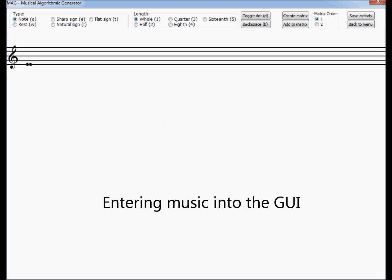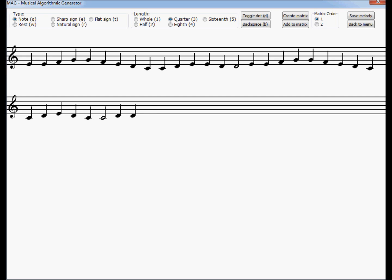I wrote in C++ an intuitive program that utilizes this method. It is named Musical Algorithmic Generator, or MAG, in reference to the magic behind music. The newly generated melodies are expected to sound similar to the originals. Here is a small demonstration.